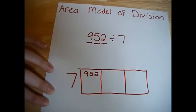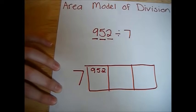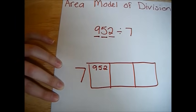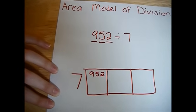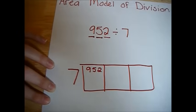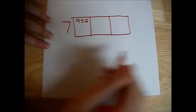Now, the goal in the area model method is to find the largest number that's a multiple of 7 that we can subtract from 952 without going over. So let's create our help box to start with.